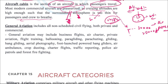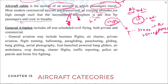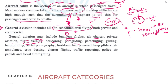Next, there are different types of aviation: general aviation, military aviation, and civil aviation. Knowing the difference between them is important. General aviation includes all non-scheduled civil flying, which includes both private and commercial operations. This covers business flights, private air charters, private aviation, flight training, ballooning, paragliding, parachuting, and many other non-scheduled civil flying activities.